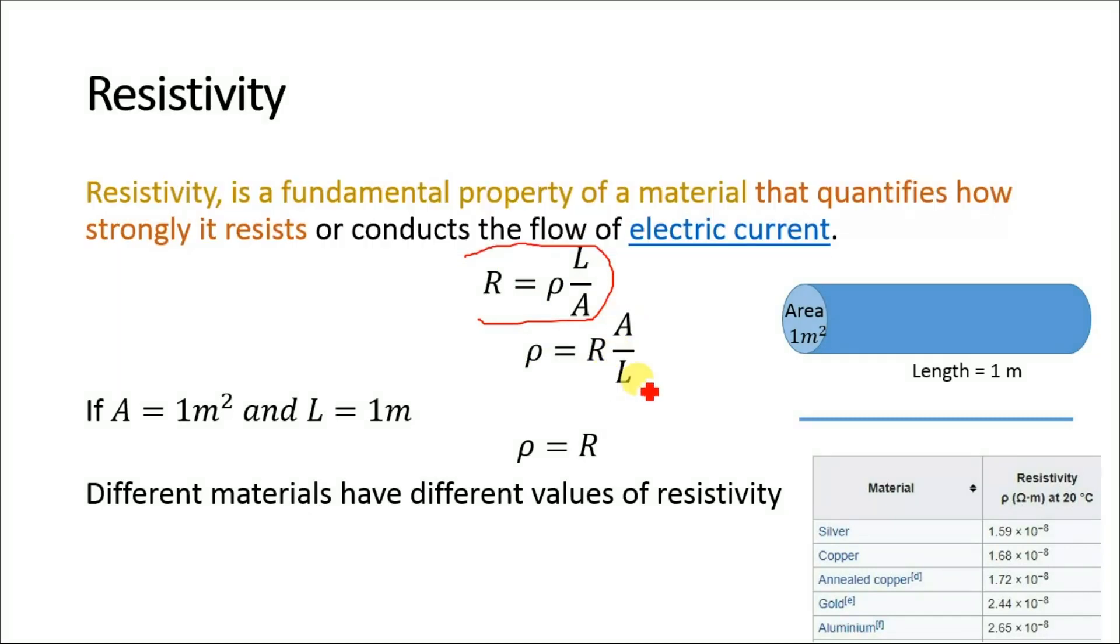For example, if we have a wire with cross-sectional area A and length L, and if the area equals one meter squared and the length equals one meter, then resistivity equals resistance.